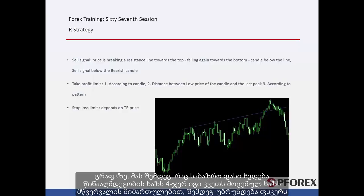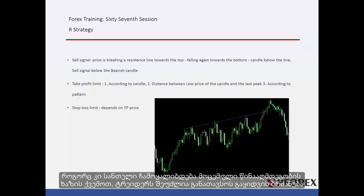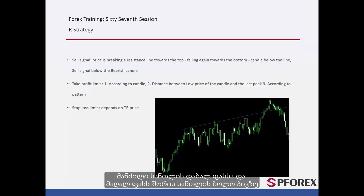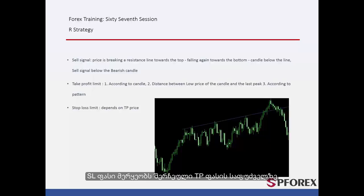On the graph, after the market price hit the resistance line four times, it crossed the given line towards the top, then returned towards the bottom. As a candle formed under the resistance line, a trader could place a sell order. TP prices could be determined by the bearish candle length, the distance between the low price of this candle and the high price of the candle on the last peak, and also a flag pattern detectable in a shorter timeframe. SL price varied based on selected TP price.